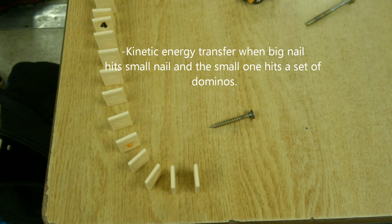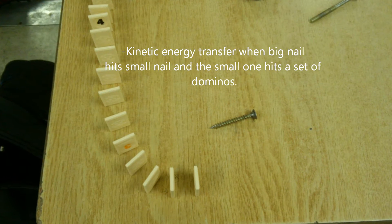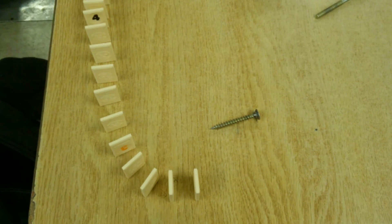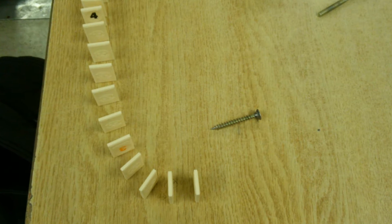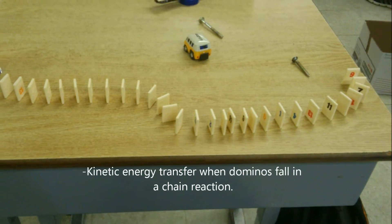The large nail will then rotate and hit another nail once again. The kinetic energy will be transferred from the large nail to the smaller nail which will rotate in the opposite direction until it hits the dominoes, leading to a chain reaction.